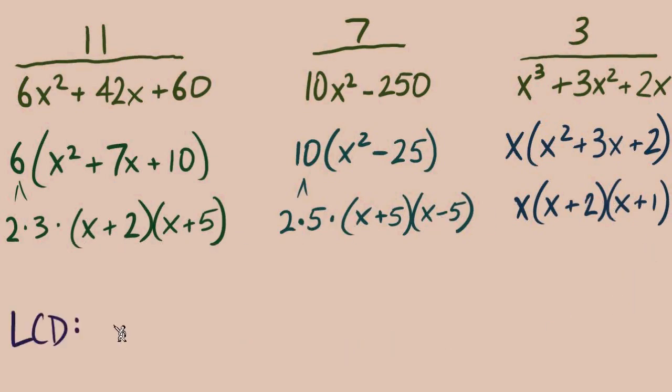Next, building the LCD. Same approach, but now we're looking at each of our three denominators. We'll start with twos. How many twos do we need? This side has one, in the middle we have one, over here we have none. Remember, we're not looking at that x. That's a different type of thing. So we just need one 2 in the LCD.